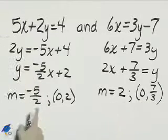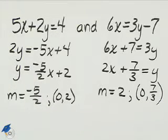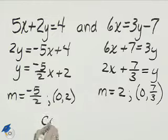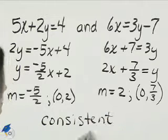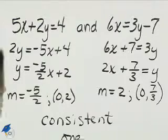You can see that the slopes are different, and the y-intercepts are different. So this is a consistent system, and because it is a consistent system, there is only one solution.